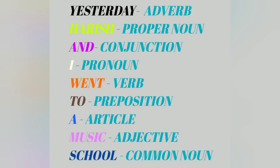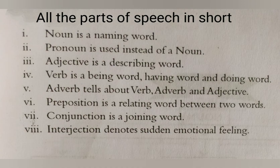Here are the short definitions of all the parts of speech. A noun is a naming word. A pronoun is used instead of a noun. An adjective is a describing word. A verb includes being words, having words, and doing words. An adverb tells about a verb, adverb, and adjective. A preposition is a relating word between two words. A conjunction is a joining word. And an interjection describes sudden emotional feelings.